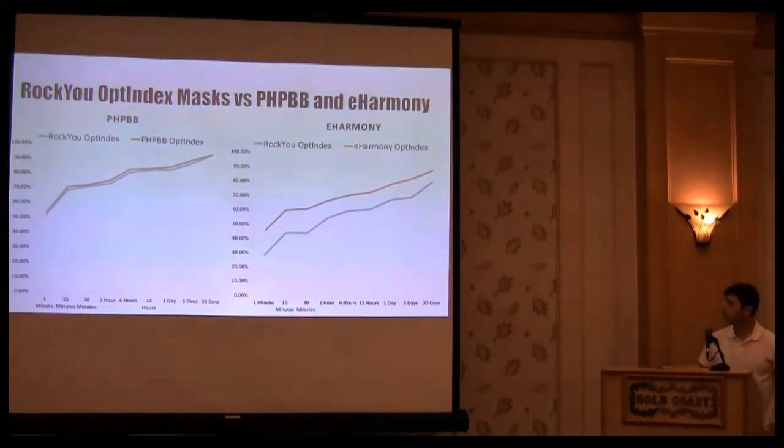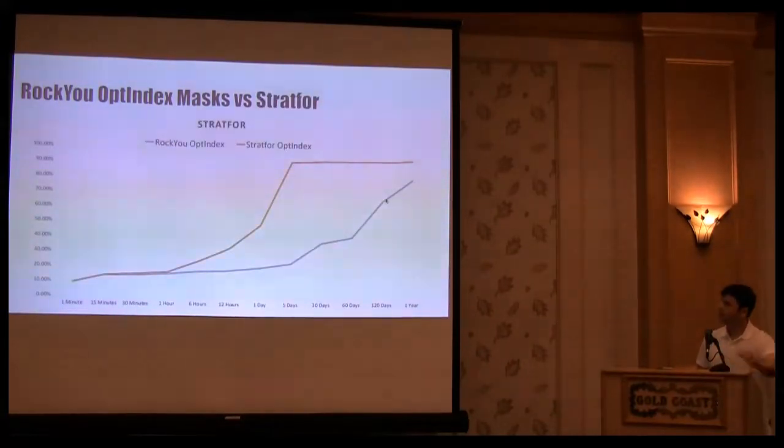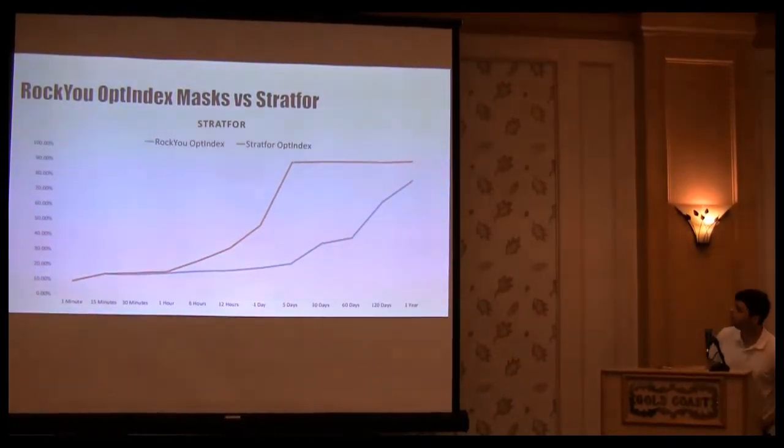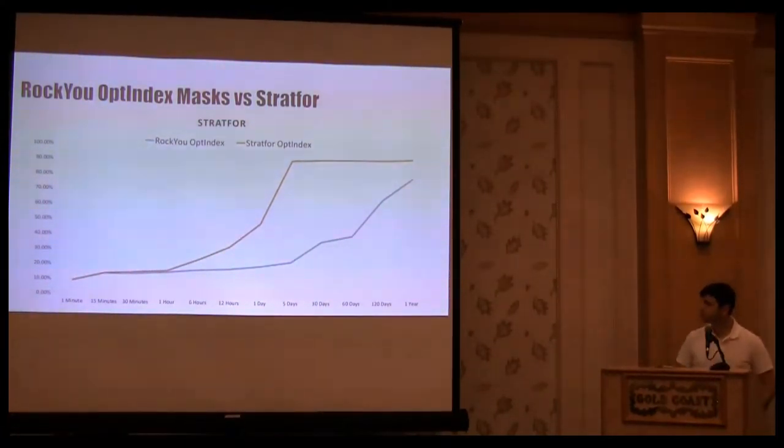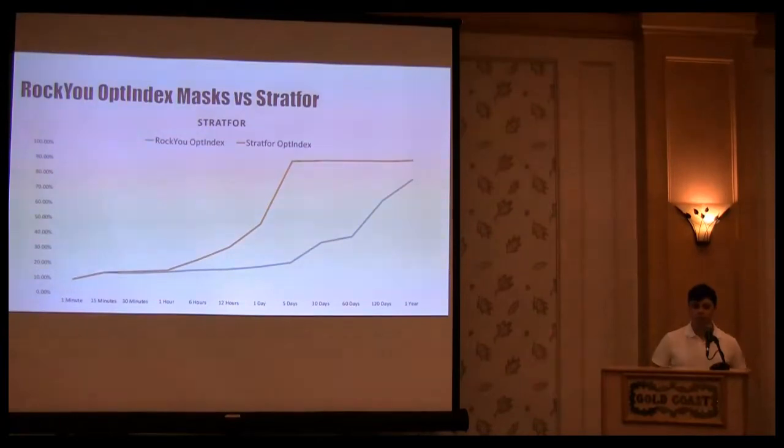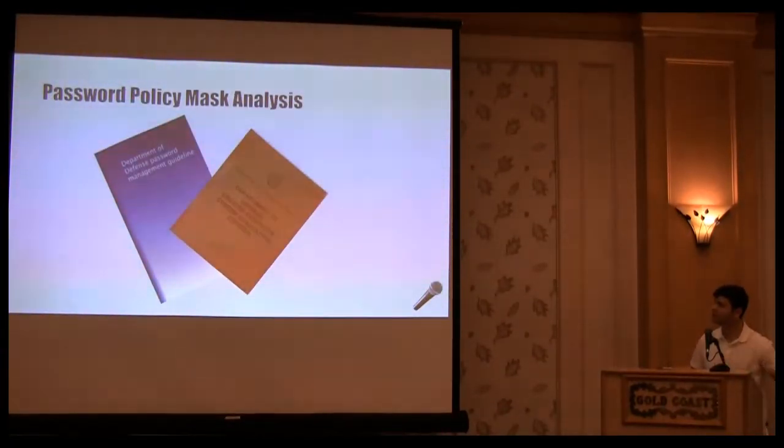PHPBB is perfect. eHarmony, even though it's using completely different character sets, we're still having no problems using op_index sorting. And here's the first stickler, Stratfor. The most optimal mask attack says that you can crack all of them within five or so days. At the same time, if you apply RockYou, it's actually doing pretty bad. Before I explain why that's happening and how we can attack this type of password selections, let me talk about password policy, attacks against password policies, and mask analysis.